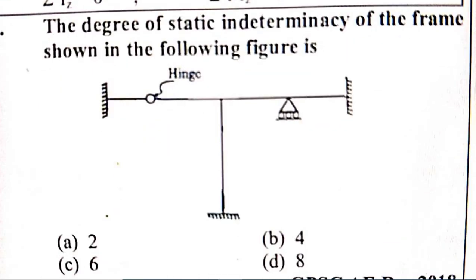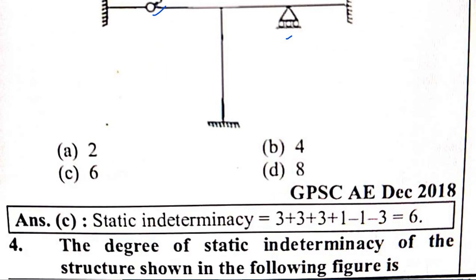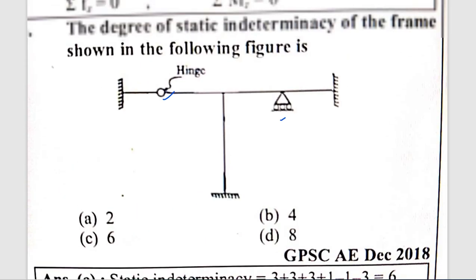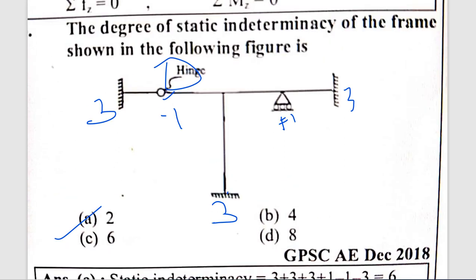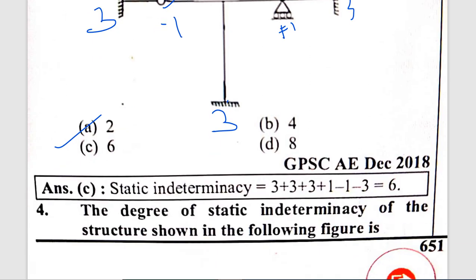Question 3: What is the degree of static indetermination of the frame shown in the figure? The structure has a hinge support, internal hinge, and roller support. The calculation involves unknown equations: 3 + 3 + 3 + 1, then minus 1 for the internal hinge, and minus 3 for the equilibrium equations. So 3 + 3 + 3 + 1 - 1 - 3 = 6. The answer is 6.